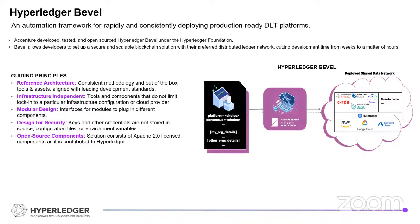Hyperledger Bevel is an automation framework for rapidly and consistently deploying production-ready DLT platforms. It is not a DLT platform itself — it is a tool that does the automation. It starts with a developer or operator configuring a single configuration file, which we refer to as a network YAML file.